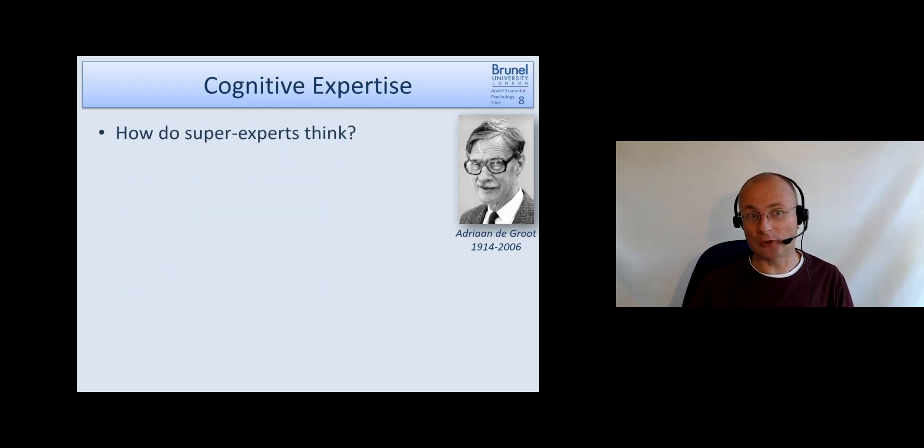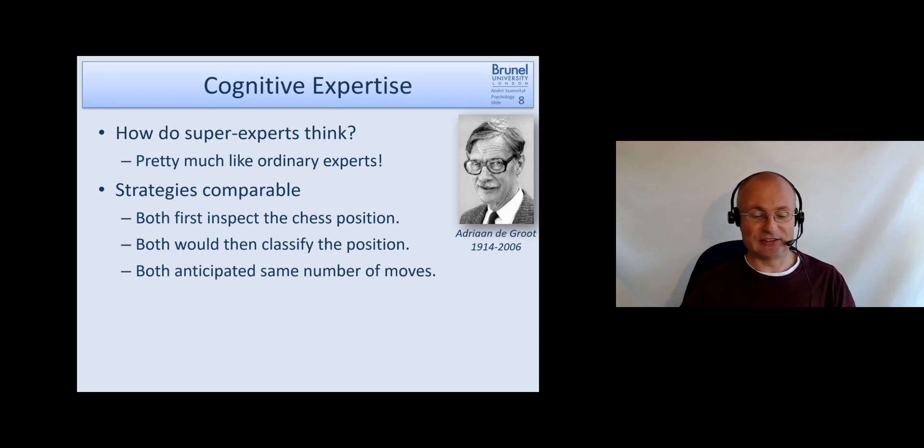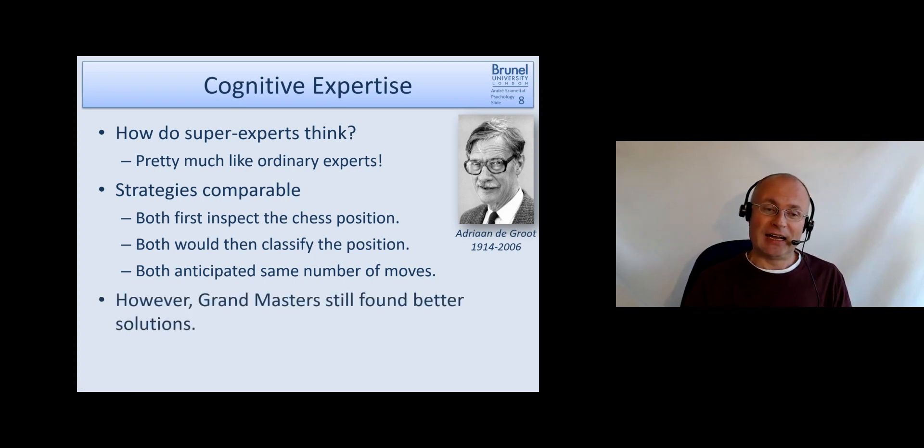So how do super experts think? What he found is pretty much like ordinary experts, so the strategies overall are rather comparable. Both super experts and ordinary experts, both first inspect the chess position, then they would try to classify the position and think ahead, anticipate a certain number of moves to see where this may lead. Both actually anticipate the same number of moves. However, grandmasters still found better solutions.